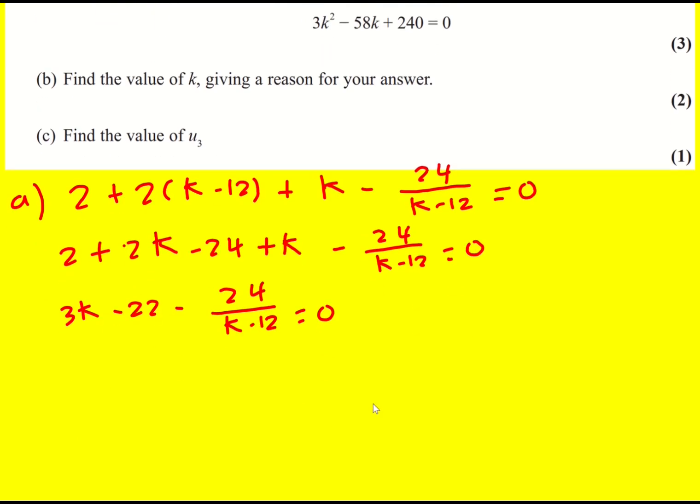And now I'm going to multiply through by k minus 12. So I'll multiply all of this together, then minus 24 to give 0. If you prefer, you could add the 24 over k minus 12 onto both sides. You might be a bit happier than multiplying the left hand side, but this is absolutely fine as well.